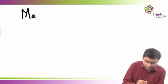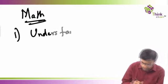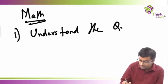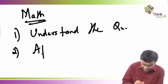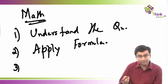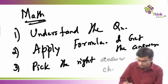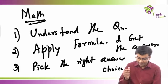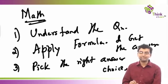Why is this essential? What do we typically do in math questions? The way we solve a math question is: first, we understand the question. Next, we apply a set of formulas. Then we apply the formula and get the answer, and finally we pick the right answer choice. So we understand the question, apply the formula, get the answer, and pick the right answer choice. This is how we solve mathematics questions.